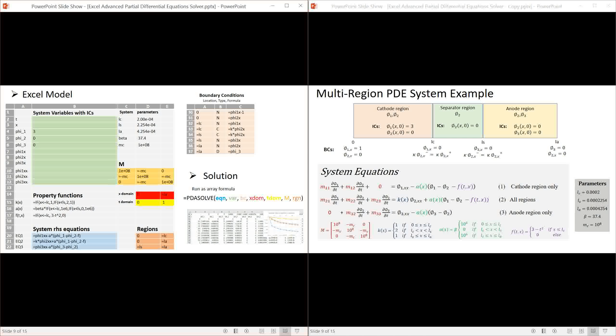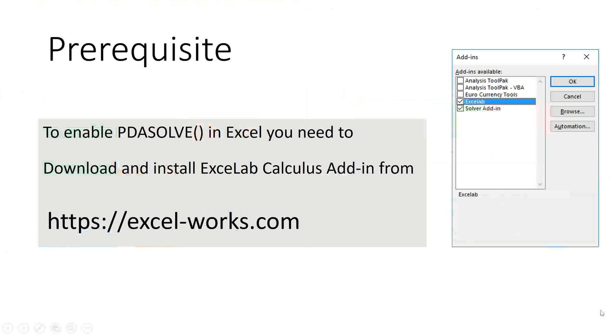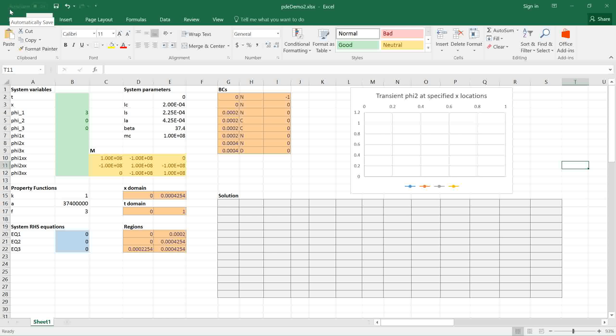Now we just pass these colored ranges to PDESolve and run it as an array formula in an allocated range of sufficient size to hold the solution. Let us demo this live in Excel. To enable PDESolve in Excel you need to download and install XeLab Calculus add-in from excel-works.com. I have prepared the input to PDESolve in the colored ranges. We are ready to run the solver.